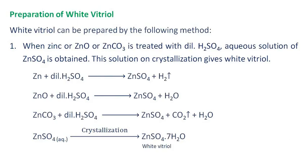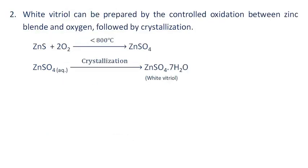Preparation of White Vitriol: White vitriol can be prepared by the following method. When zinc, zinc oxide, or zinc carbonate is treated with dilute sulfuric acid, an aqueous solution of zinc sulfate is obtained. This solution on crystallization gives white vitriol.